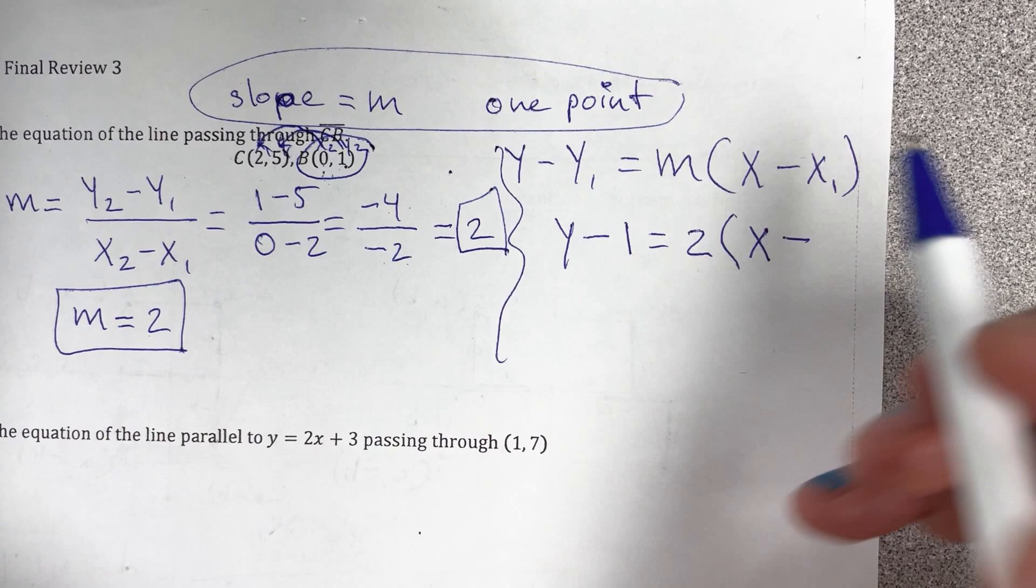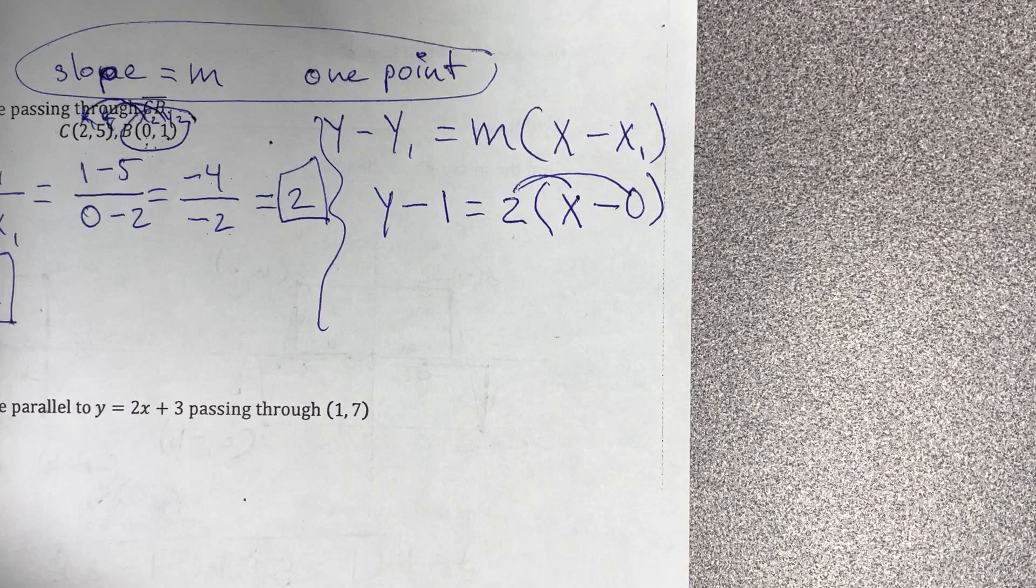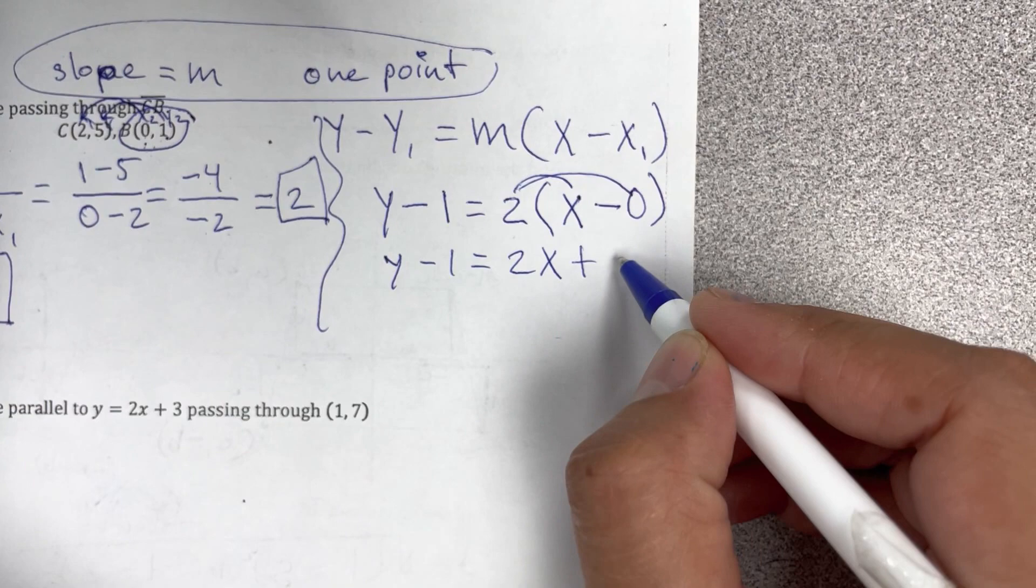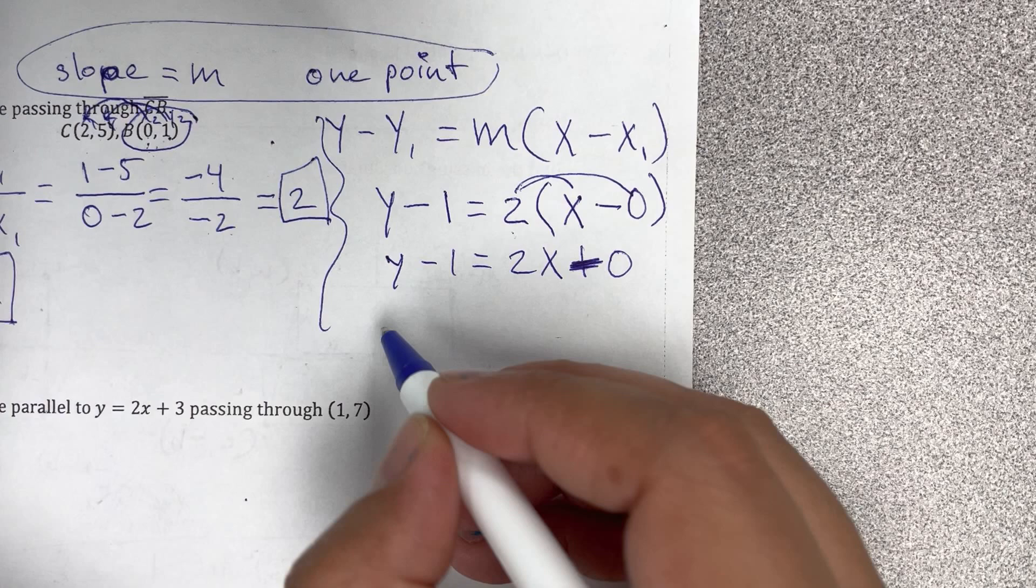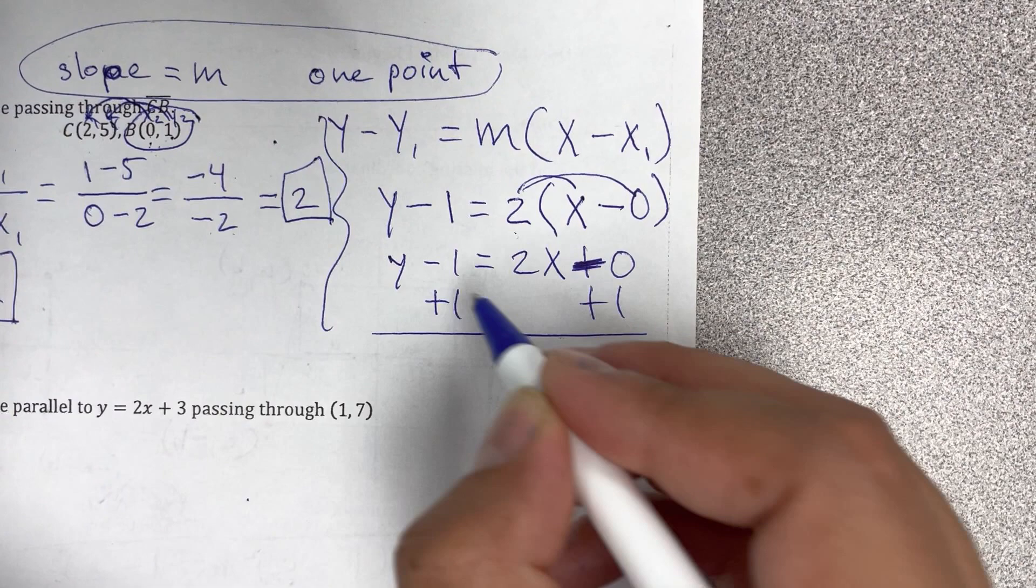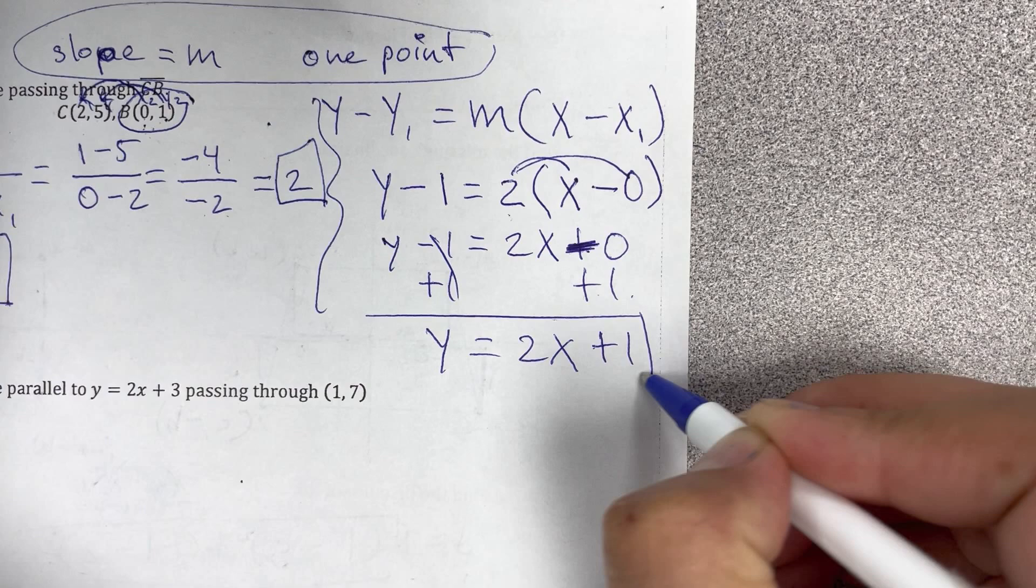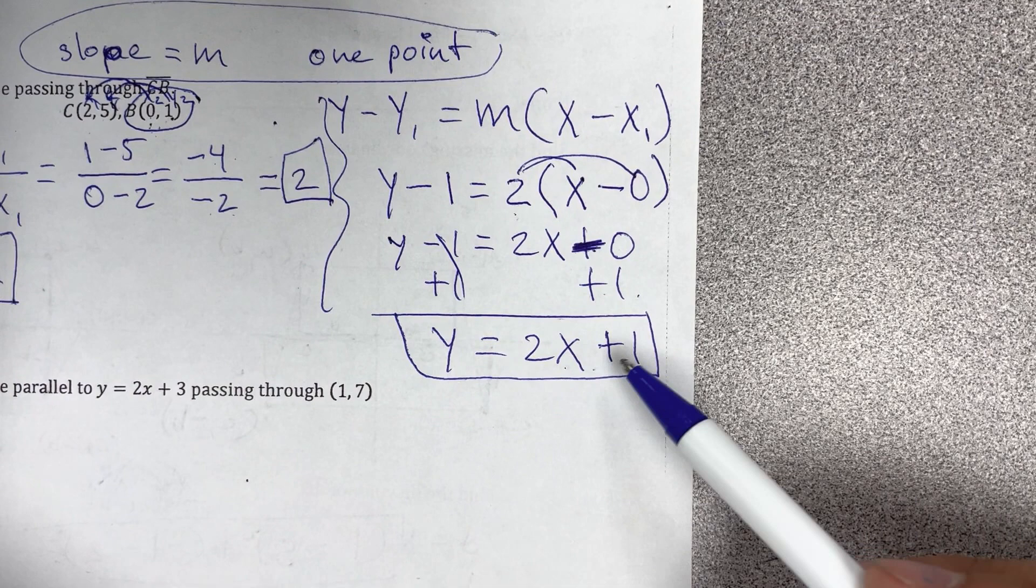We do distribute property and this you just bring down the same way and 2 times x is 2x, 2 times 0 is just 0. Ni siquiera necesitan ponerlo, pero si sienten que necesitan 2 times negative 0 o sería más bien minus 0. Acá si estamos restando vamos a sumar 1 and you get y equals 2x. Si tengo negative 0 o positive 0, it doesn't matter, plus 1 is just going to be plus 1. So that's going to be the answer y equals 2x plus 1.